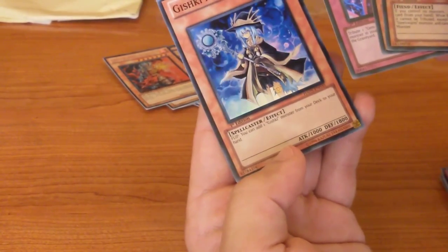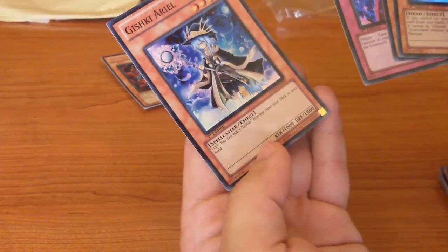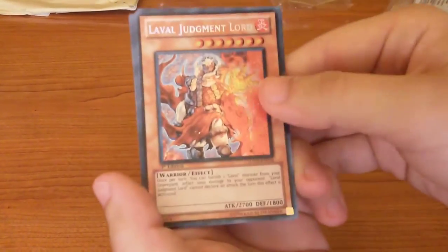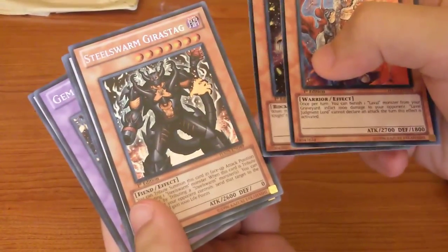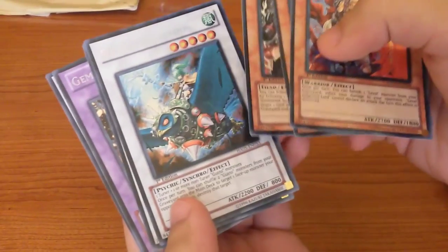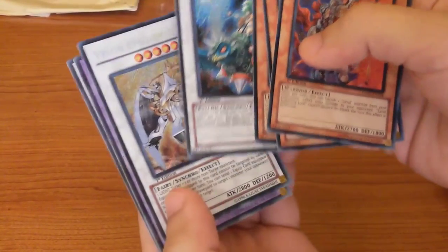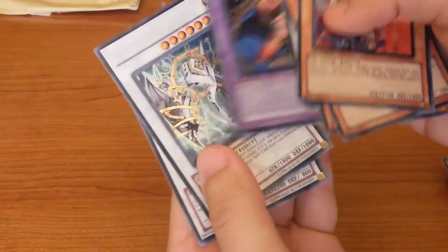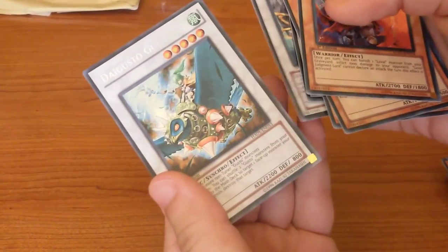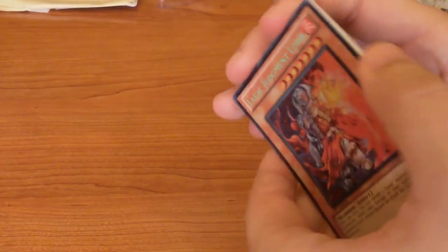Okay guys, so those were the cards. Let's see the secret rares. Lavalval Judgment Lord, Gem Armadillo, Steelswarm Girastag I think, Digusto Guldos, Vylon Epsilon, Gem Knight Ruby, Vylon Sigma, Digusto Guldos. So those were the secret rare cards I got from the eight booster packs.